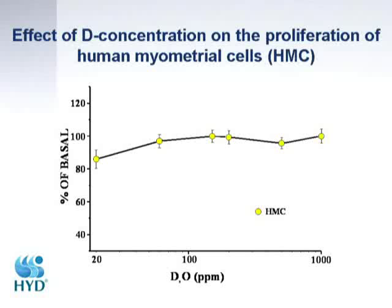We also tested a non-tumorous cell line — a human myometrial cell line. Some effect was observed, but it was never as large as that seen with the tumorous cell lines.